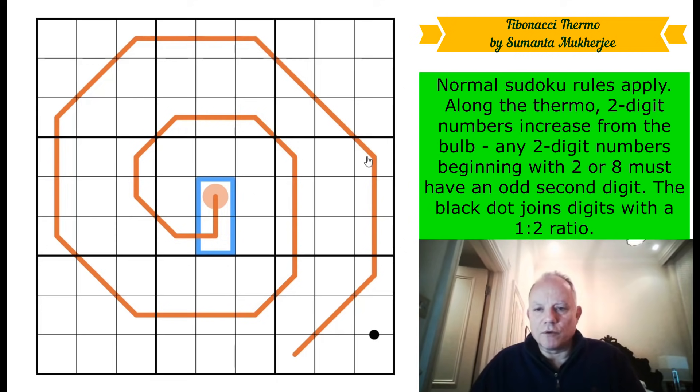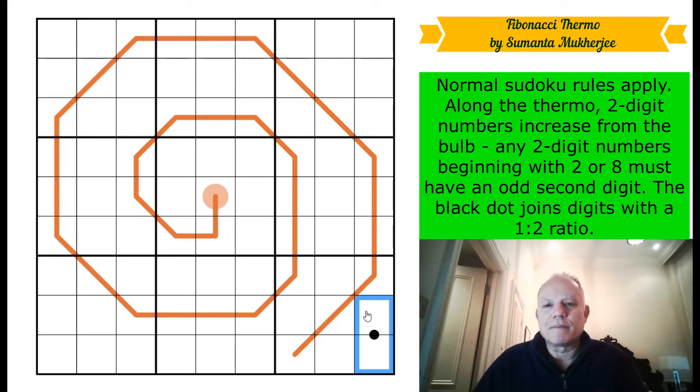Now, there is one extra rule about those. Any two-digit numbers beginning with two or eight must have an odd second digit. The black dot, that's just this one down here, joins digits with a one-to-two ratio. I'm assuming that'll disambiguate at the end or something.